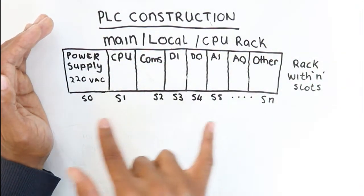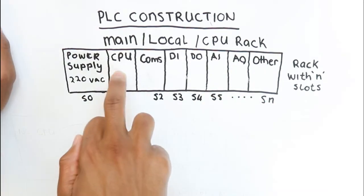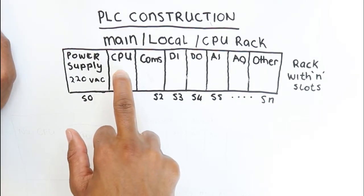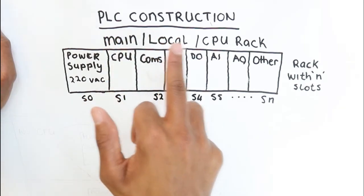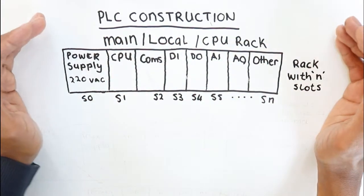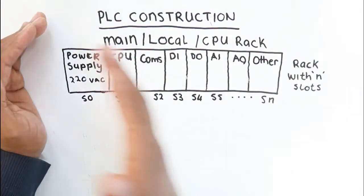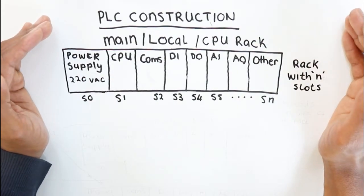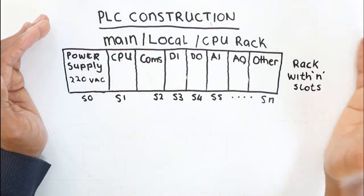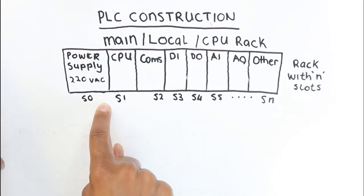The rack that has the CPU is usually called the main local or CPU rack. This is the first rack that you get on your PLC. So let us go through what you would usually get on a PLC rack. The first device or the first component that you get on the first slot of your PLC rack is usually the power supply.